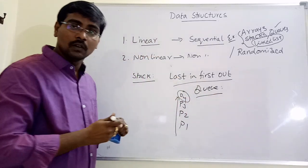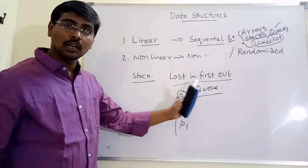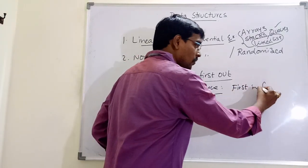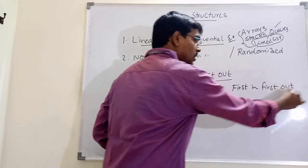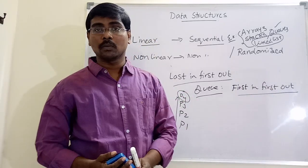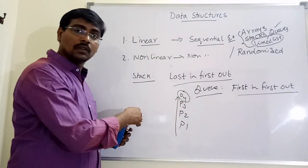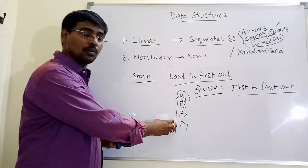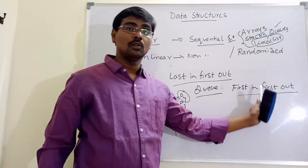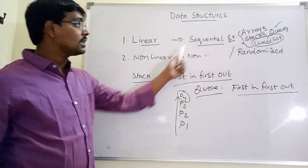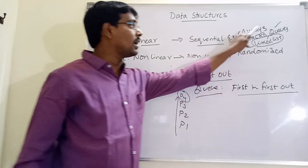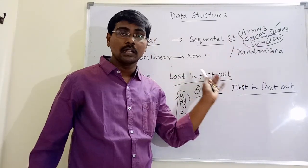Similarly, queue — like any railway queue or bus queue — follows first in first out. The first person who enters into the queue is the first person who leaves the queue. Stack is exactly the reverse: the first person who enters is the last person to come out. But in a queue, the first person who enters is the first person to come out. Stack, queue, array, and linked list all represent different ways of organizing data.